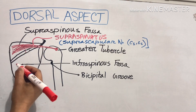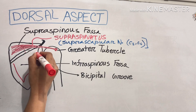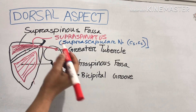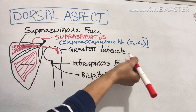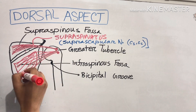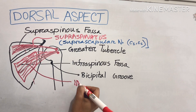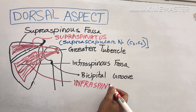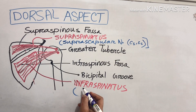Now we will see the infraspinatus muscle. Its origin is from the medial two-thirds of the infraspinous fossa and it is inserted into the middle impression of the greater tubercle of the humerus. The infraspinatus muscle is also supplied by the suprascapular nerve from C5, C6.